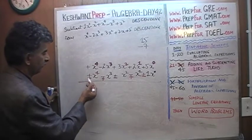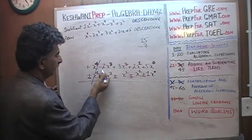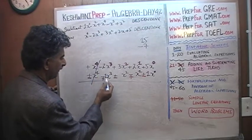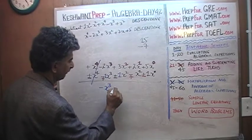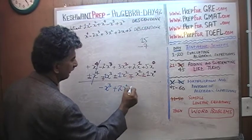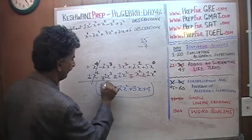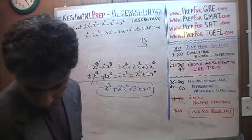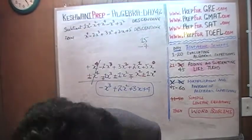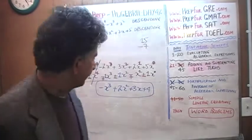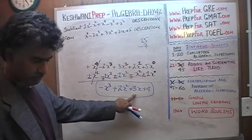Here we have x raised to 4 minus x raised to 4 — that whole thing drops out. Here we have negative 2x cubed and a positive 1x cubed; negative 2 and positive 1 gives us negative x cubed. Positive 3 and negative 1 gives us positive 2x squared. Positive 2 and positive 1 gives us positive 3x. And positive 5 and negative 1 gives us positive 4. There you go — that's our answer. Our answer is negative x cubed plus 2x squared plus 3x plus 4.